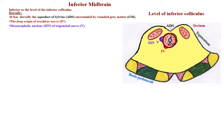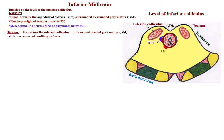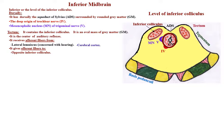The tectum contains the inferior colliculus, which is an oval mass of gray matter and is the center of auditory reflexes. It receives afferent fibers from the lateral lemniscus, concerned with hearing, and from the cerebral cortex. It gives efferent fibers to the opposite inferior colliculus, to the tectospinal and tectopalpebral tracts, and to the medial geniculate body for hearing.